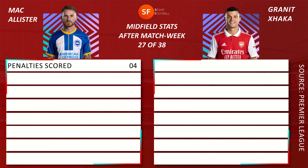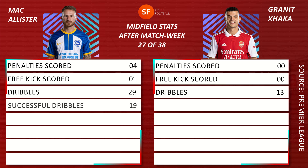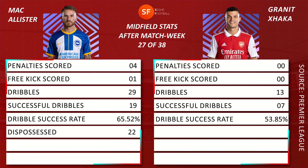McAllister penalties scored: 4, Xhaka: 0. McAllister free kicks scored: 1, Xhaka: 0. McAllister dribbles: 29, Xhaka: 13. McAllister successful dribbles: 19, Xhaka: 7. McAllister dribble success rate: 65.52%, Xhaka: 53.85%. McAllister dispossessed: 22, Xhaka dispossessed: 20.